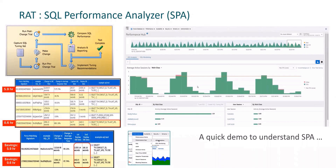To illustrate SPA, there are snippets from a capture versus replay report from one system where we can clearly see two regressed SELECT statements marked in red. They took 5.9 hours and 0.6 hours respectively to complete — that's 7,175 percent change in average response time for the first one, and almost 6,861 percent for the second. This is the best use case to test and tune them using SPA before implementing the solution on the target system.